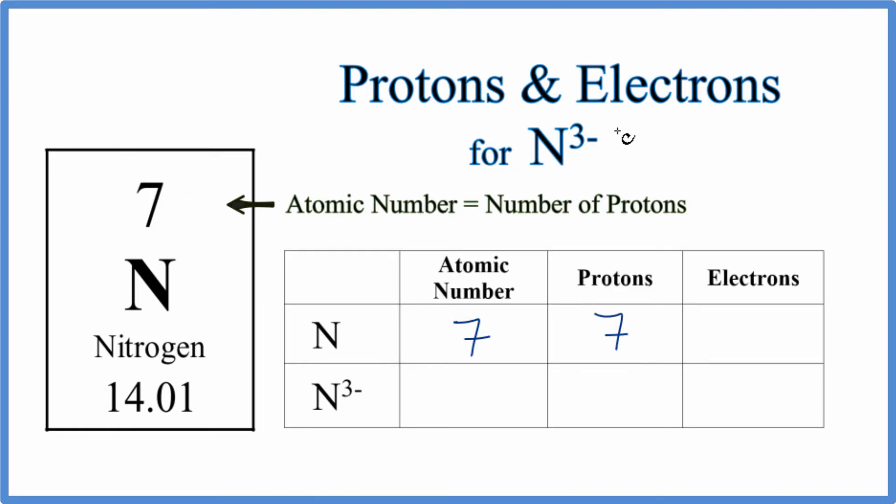When we look at an ion like N3- compared to a neutral element, the only thing that's different is the number of electrons. Everything else will be the same.